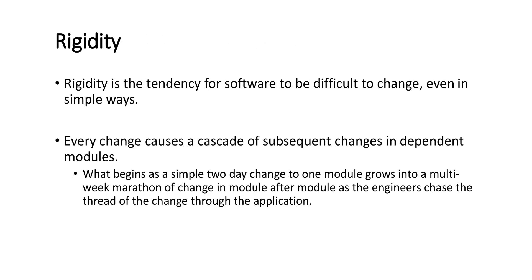As we discussed in previous classes about modules, if we have a parent module with a child module, a change in the parent module creeps into the child modules. Every change has a cascading effect in the dependent modules. What begins as a simple two-day change to one module grows into a multi-week marathon of changes across modules after modules as the engineer threads the change through the application. If the design is rigid, you will find it difficult to accommodate this change.